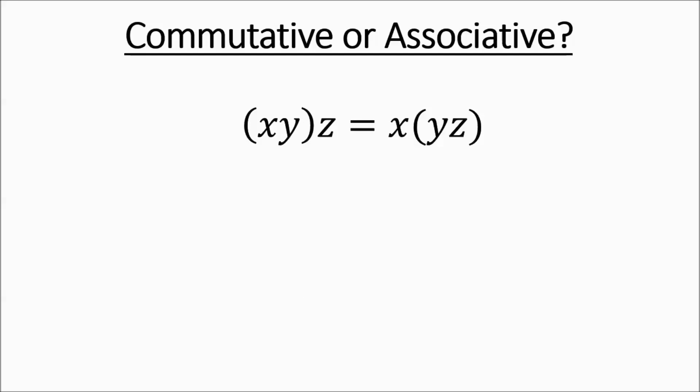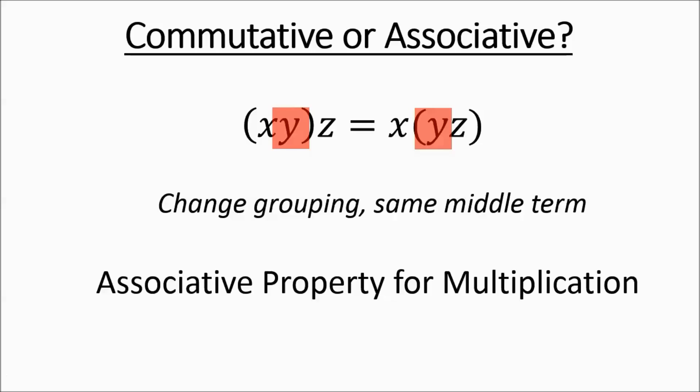So we have XYZ, XYZ. The Y is in the middle, being grouped with a different variable. Here it's grouped with X. Here it's grouped with Z. Change grouping, same middle term, associative property for multiplying.